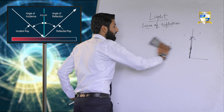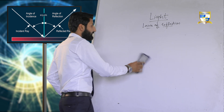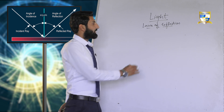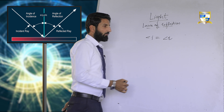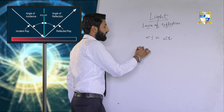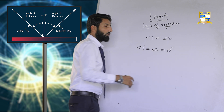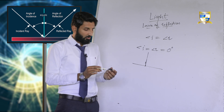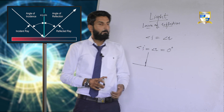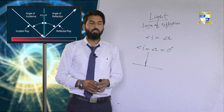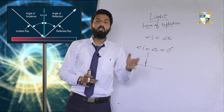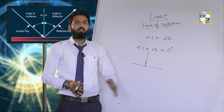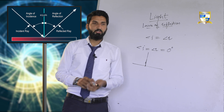Let's recapitulate the laws of reflection. The first law: the incident ray, the reflected ray, and the normal to the point of incidence all lie in the same plane. The second law: the angle of incidence is always equal to the angle of reflection. The special case: when the ray is perpendicular to the mirror or coincides with the normal, angle of incidence equals angle of reflection equals zero degrees. When writing these laws in examination, make sure the diagram is neat and clean, drawn on about one full page so that angles, rays, and the point of incidence are clearly visible. Thank you, we will discuss the next topic in the next lecture.